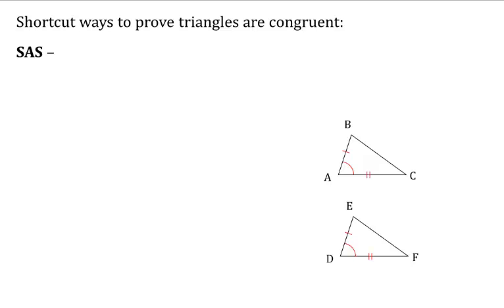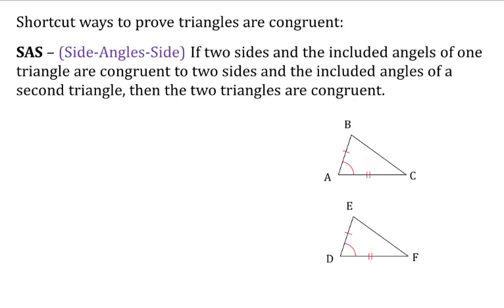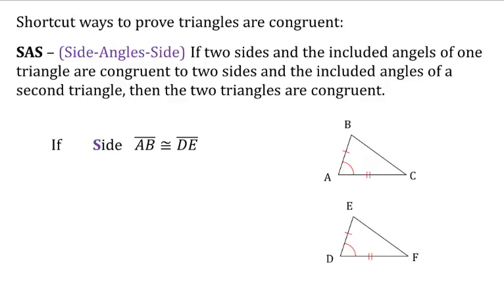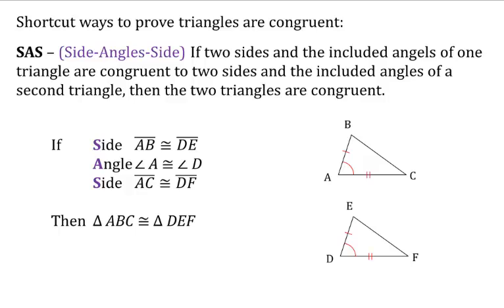The next way is called side-angle-side, or SAS. This says that if two sides and the included angle of one triangle are congruent to two sides and the included angle of a second triangle, then the two triangles are congruent. The included angle is the angle between the two congruent sides — where the two congruent sides meet. So AB is congruent to DE, angle A is congruent to angle D, and side AC is congruent to side DF. That gives us SAS, so triangle ABC is congruent to triangle DEF.